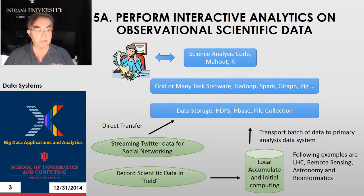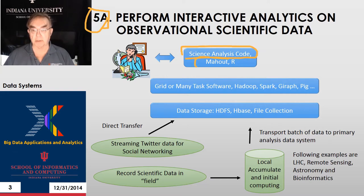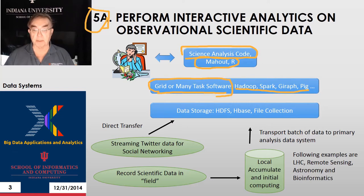Here we have the basic idea. We call it 5A, so it's a modification of what Bob did. We have science analysis code up here. We also put in the standard Apache solution — Apache Mahout or R. And then we put here various software: the Apache software, Hadoop, Spark, Giraffe, Pig. And also the high-performance computing solutions, which include the grid and many-tasks software for many of these problems, like the Large Hadron Collider analysis.